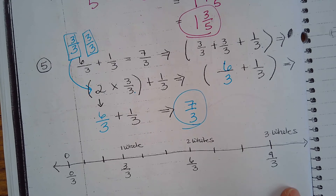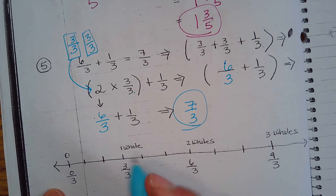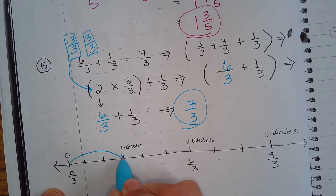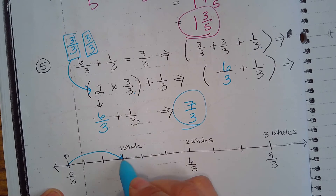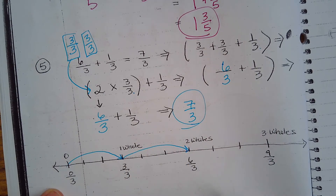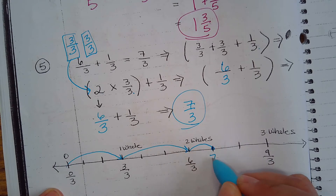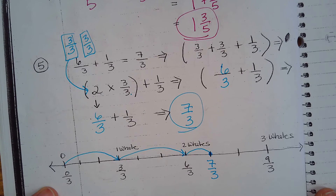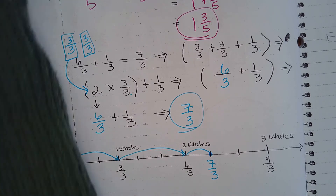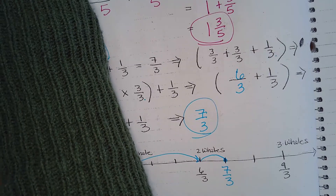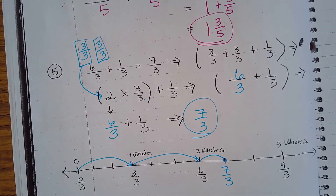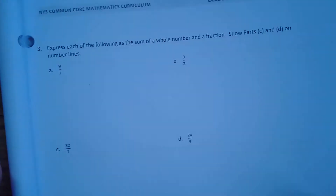Let's map it out on the number line. Here's three-thirds, another three-thirds, and then one more — we end up at seven-thirds. Good job. Now we're going to go over and look at the problem set.